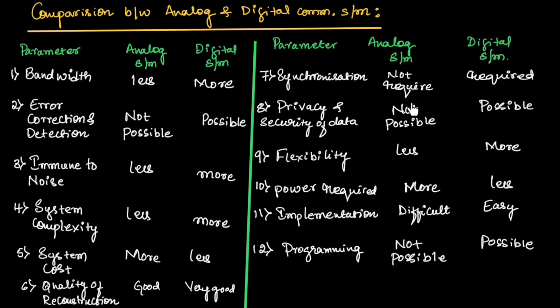In the analog system, the privacy and security of data is not possible, but in the digital system, the privacy and security of data is possible. The analog systems are less flexible compared to the digital system, and digital systems are more flexible compared to the analog system.